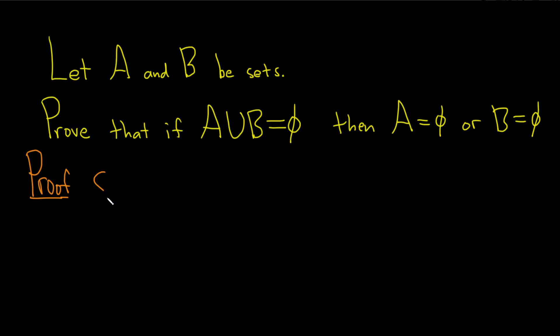So we'll start by supposing that this is not true. So what does it mean for this not to be true? Well, the negation of the statement is that A is not empty and B is non-empty. So that is the negation of that statement. So now we have to show that this is not true.